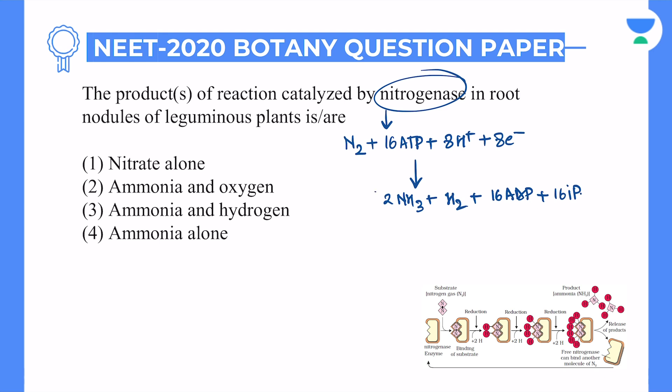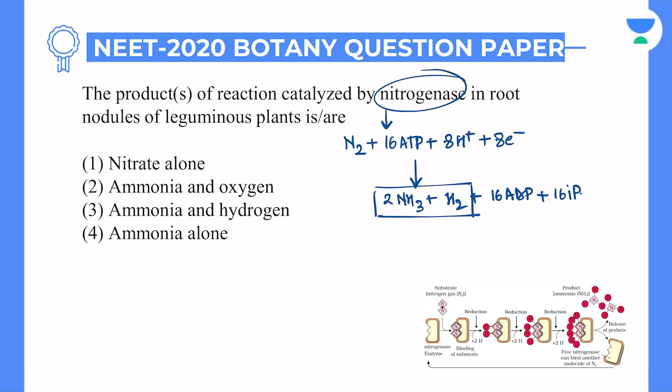In our products you see there are 2 gases: you get 2 ammonia and 1 hydrogen molecule out of it, along with 16 ADP and 16 inorganic phosphate. One gas is ammonia being released and the other is hydrogen. So if we see the options, the products asked point to option number 3: ammonia and hydrogen.